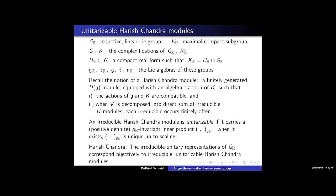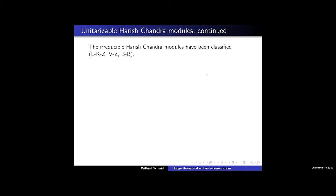So to understand the irreducible unitary representations of the group G_R is transformed into a seemingly algebraic problem, but a very difficult one. The irreducible Harish-Chandra modules, whether or not they are unitarizable, have been classified. There are three classification schemes due to Langlands-Knapp-Zuckerman, Vogan-Zuckerman, and Bernstein. They are on the surface different, but they classify the same objects, so they are equivalent, though not obviously so.